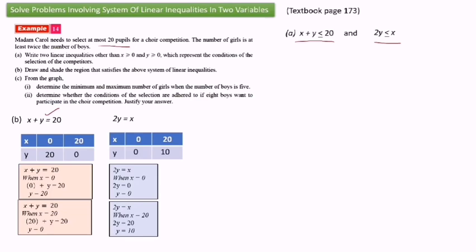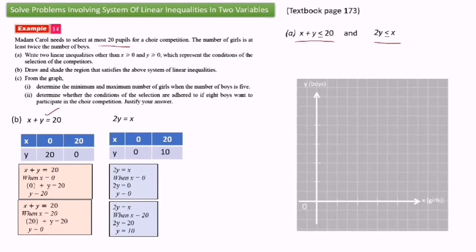We complete these two tables. Now we draw the graph on grid paper. For the x-axis, values start from 0, 5, 10, 15, and 20. For the y-axis, we also start with 0, 5, 10, 15, and 20. Now we draw the straight line x plus y equals 20 by plotting the points: coordinate (0, 20) and coordinate (20, 0). Use a ruler to draw a straight line through these two points.